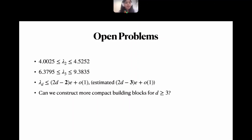To conclude with the open problems: the major one is to narrow the gap between the upper and lower bounds. In d dimensions we have almost closed the bound — the estimated value is (2d−3)e and we show (2d−2)e, leaving only a factor of e to close. Another interesting question is whether we can construct more compact building blocks for d ≥ 3: we showed it is impossible in 2D, but can we reduce from 17 building blocks in 3D, and can we do so in higher dimensions?